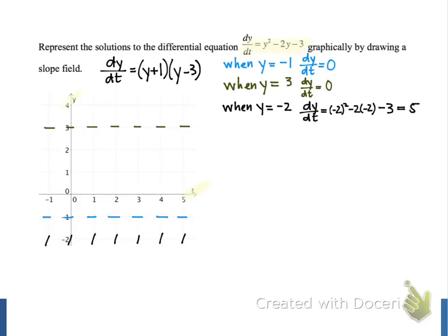Next, we'll go up a little bit to when y is equal to 0. When we evaluate dy/dt at y equals 0, we get negative 3. So this time our tangent lines will have a negative slope that is fairly steep, but perhaps not quite as steep as the ones we drew at y equals negative 2.